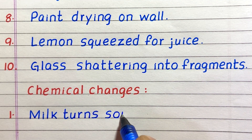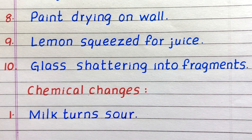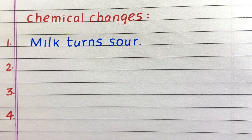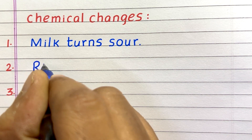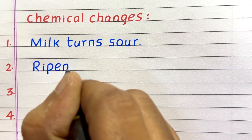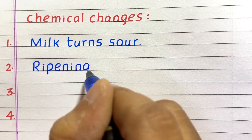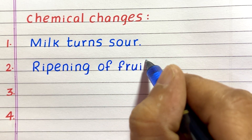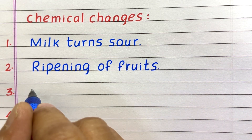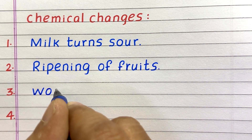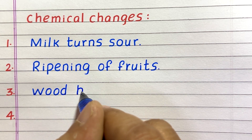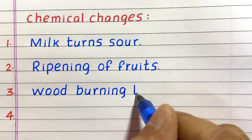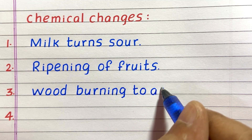First example of a chemical change is milk turns sour. Second example of a chemical change is ripening of fruits. Third, wood burning to ash.